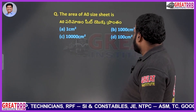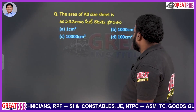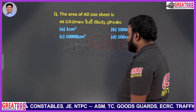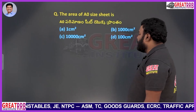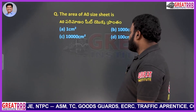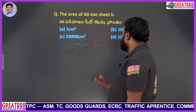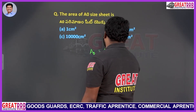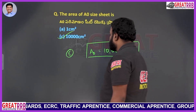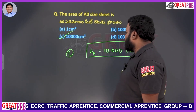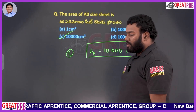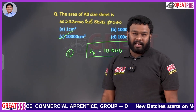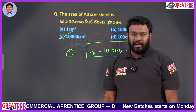The area of A0 size sheet is: A 1 cm², B 1000 cm², C 10,000 cm², D 100 cm². The standard answer is that an A0 sheet has an area of 10,000 cm². Option C will be the right answer for the given question.